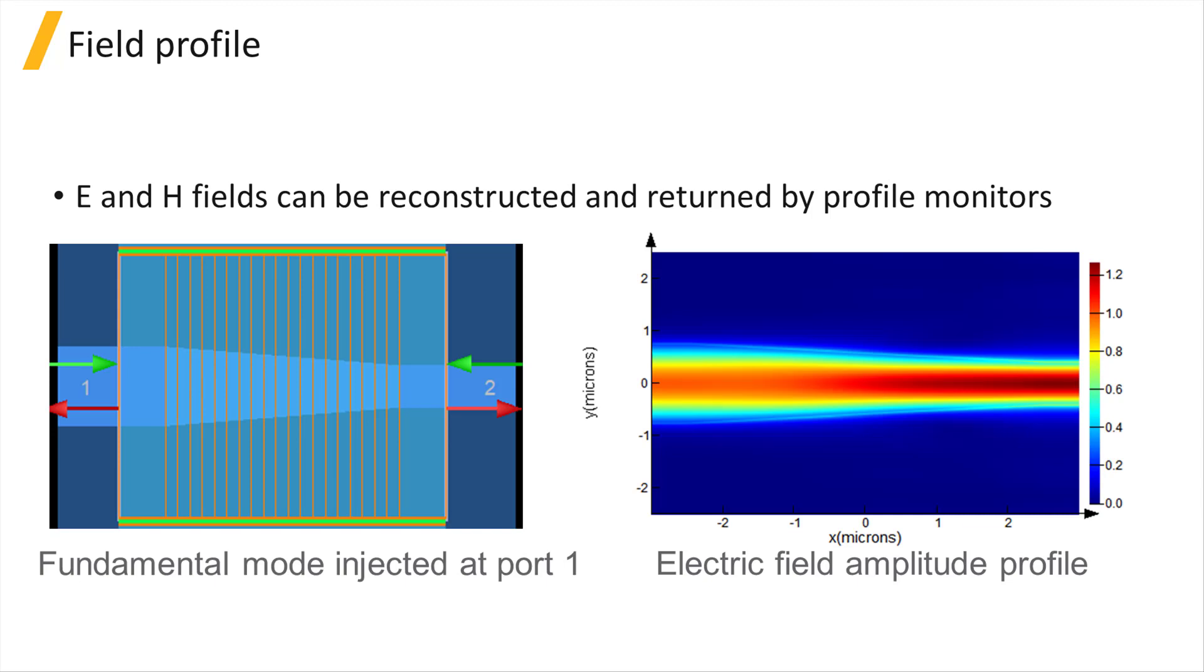Because we know the S-matrices for each cell interface, we can get the coefficients of forward and backward propagating modes in each cell, and this allows us to reconstruct the field profile due to a specific source mode at any given position along the propagation axis.